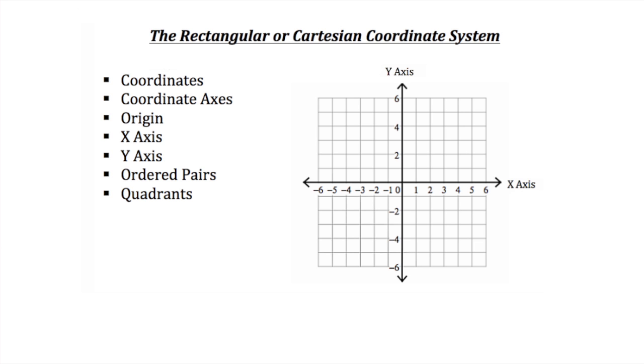Let's begin by talking about the Cartesian coordinate system. A point on a number line can be specified by a real number x called its coordinate. Similarly, by using a rectangular or Cartesian coordinate system, we can specify a point P in the plane with two real numbers, also called coordinates.